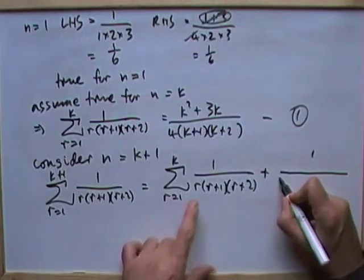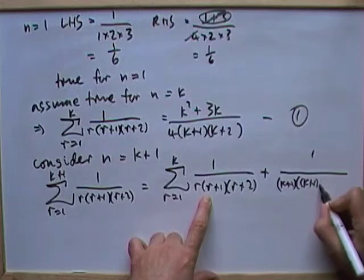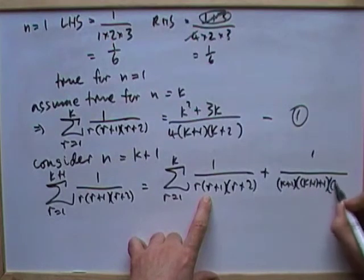Well, that extra term is this part here, of course, 1 over with k plus 1's. So, k plus 1, times k plus 1 plus 1, times k plus 1 plus 2.